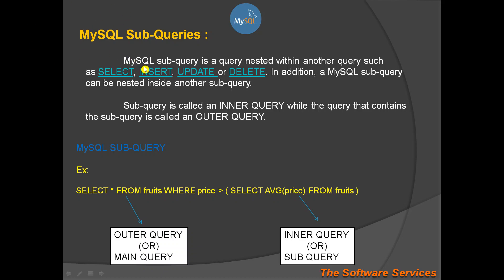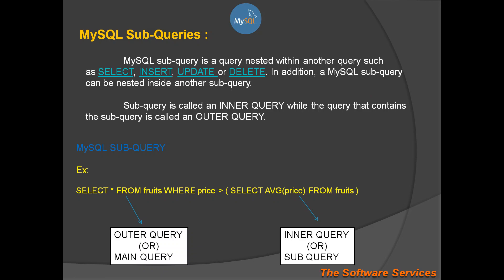So, in MySQL, a subquery is a query nested within another query. The outer query can be a SELECT, INSERT, UPDATE, or DELETE. This nested query is called a nested query or a subquery. MySQL subqueries can even be nested inside another subquery depending on task complexity — two-level or three-level. The subquery is called the inner query, and the main query is called the outer query.